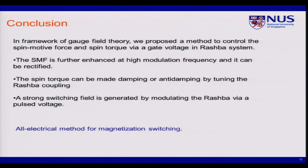So in conclusion, in the framework of gauge field theory, I derived the spin-motive force in a system where the magnetization is spatial and time-dependent, and the Rashba is also time-dependent. I show that the spin-motive force is large enough to induce large spin current that can switch the magnetization. Thank you.